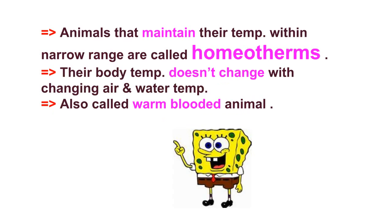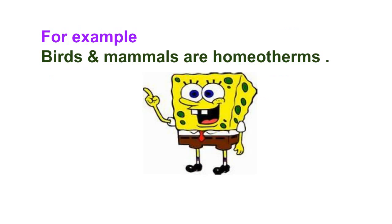On the other hand, animals that maintain their temperature within a narrow range are called homeotherms. Their body temperature does not change with changing air and water temperature, and they are also called warm-blooded animals. For example, birds and mammals are homeotherms.